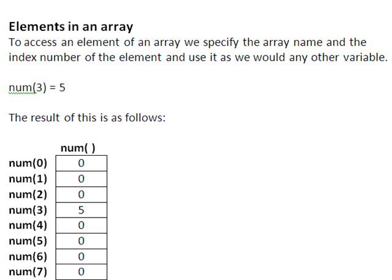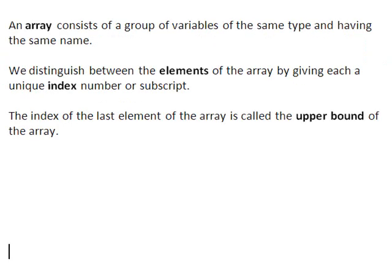So let's recap briefly. An array consists of a group of variables of the same type and having the same name. We distinguish between the elements of the array by giving each a unique index number or subscript. And the index of the last element of the array is called the upper bound of the array.